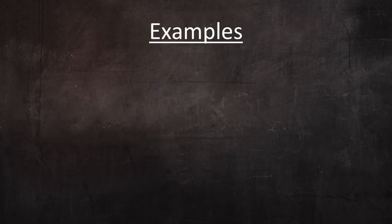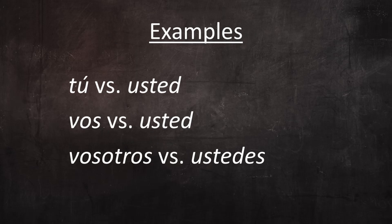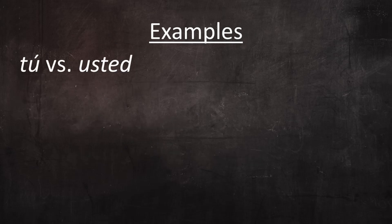With that introduction, let's look at some examples comparing and contrasting the grammar: first of tú and usted, then of vos and usted, and finally of vosotros and ustedes. The contrast between tú and usted is between friendly, informal address and polite, formal address — more on exactly what that means in the next video. Observe that in the examples with usted, all the accompanying grammar forms are third person.